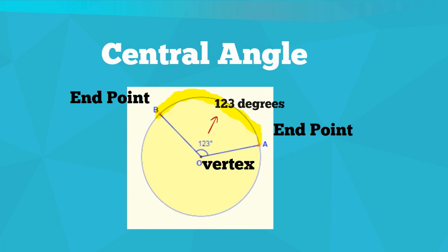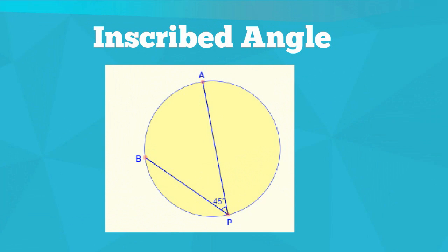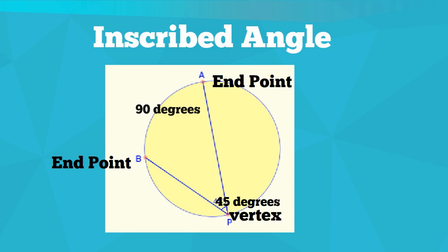The central angle equals the arc measure. An inscribed angle is an angle in which the vertex lies on the circle and the end point is also on the circle. The inscribed angle equals one half the intersected arc.